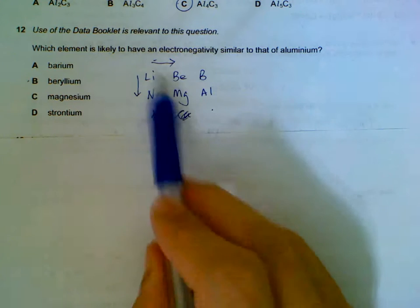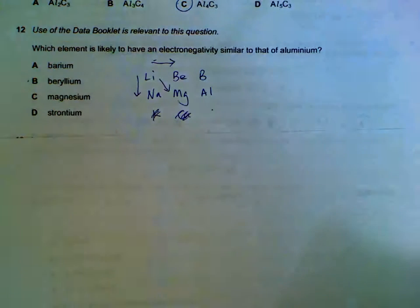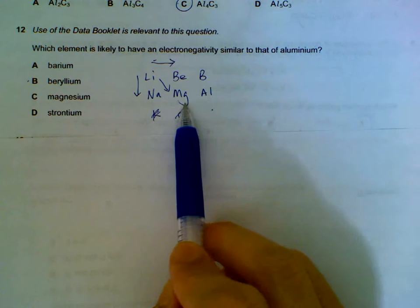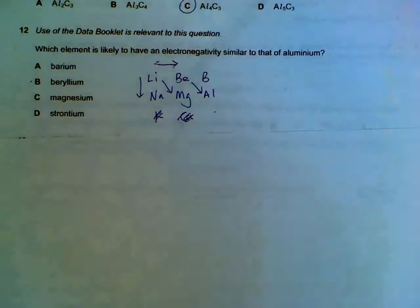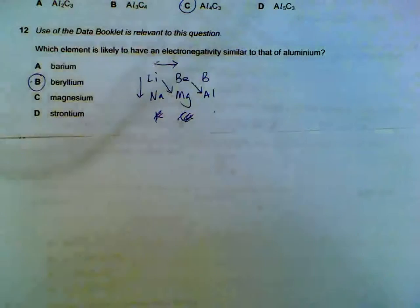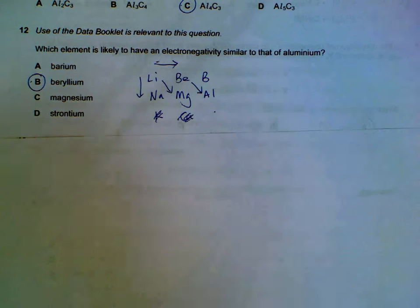So what actually happens is, if we go diagonal, the effects actually cancel out. That's why lithium and magnesium have similar electronegativity. Beryllium and aluminium have similar electronegativity. This is what we call the diagonal effect. You can actually google it for more information on the internet.